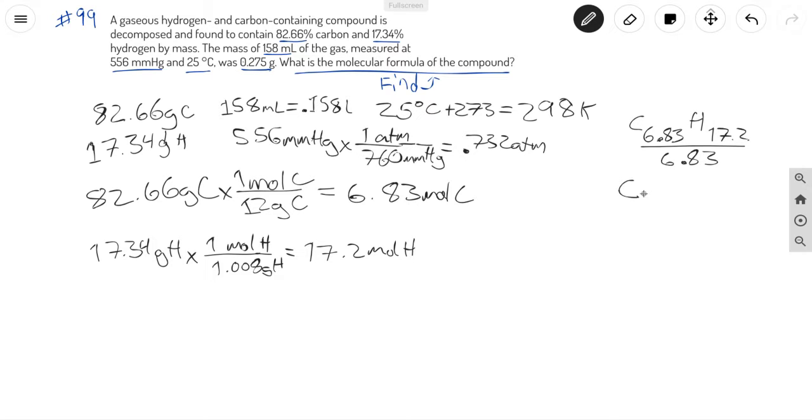But we can't have a subscript that's not an integer, so we're going to multiply by 2, and this here is our empirical formula.